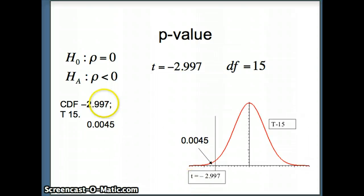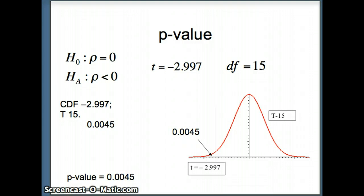And that, of course, is going to be our p-value since it is a one-tailed test to the left. So we get a p-value of 0.0045.